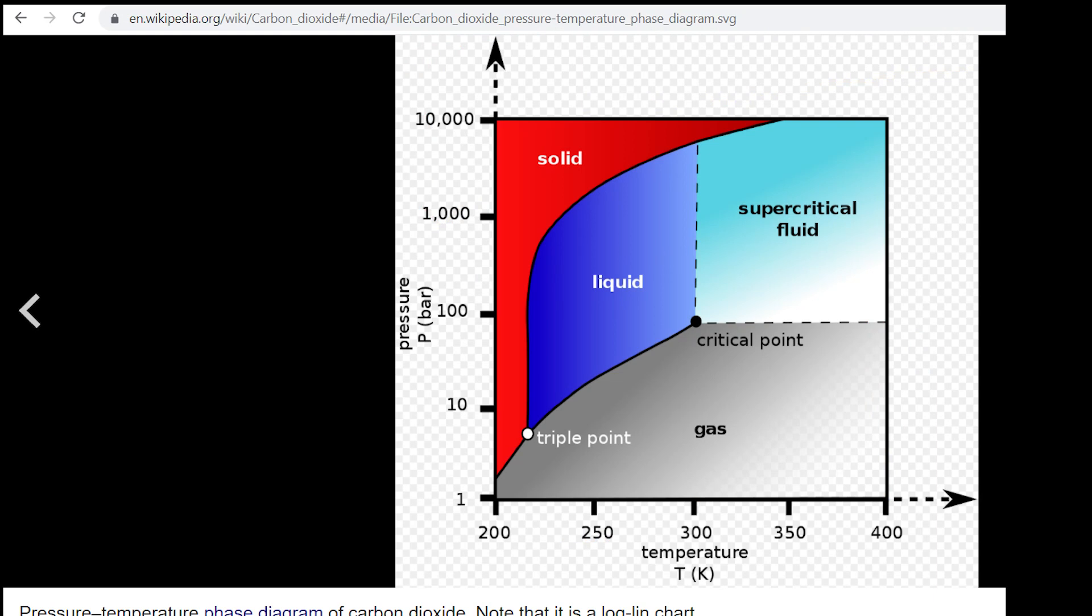A quick stop over at the Wikipedia page for carbon dioxide shows us the phase diagram for carbon dioxide. Notice how the liquid phase can only exist above a pressure that corresponds to the triple point of carbon dioxide. The triple point is the point at which all three phases can exist, but as soon as you drop below that triple point, which for carbon dioxide is 5.1 bar, the liquid phase disappears altogether.